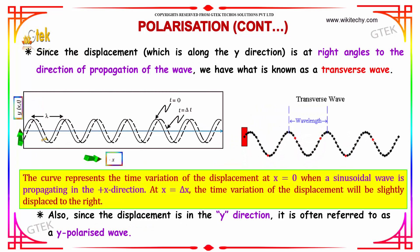Since the displacement, which is along the y direction, is at right angles to the direction of propagation of the wave, we have what is known as a transverse wave. Also, since the displacement is in the y direction, it is also referred to as a y-polarized wave.